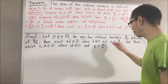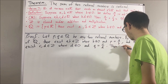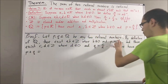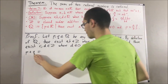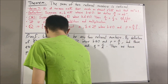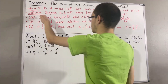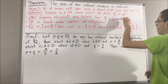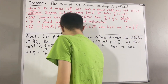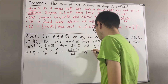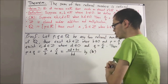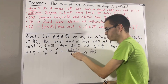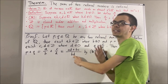If we perform p plus q, we can substitute p for a over b and substitute q for c over d. Then, by our proven formula, a over b plus c over d is equal to ad plus bc, all over bd. To show that p plus q is a rational number, we want to show that ad plus bc and bd are integers, where bd is non-zero.